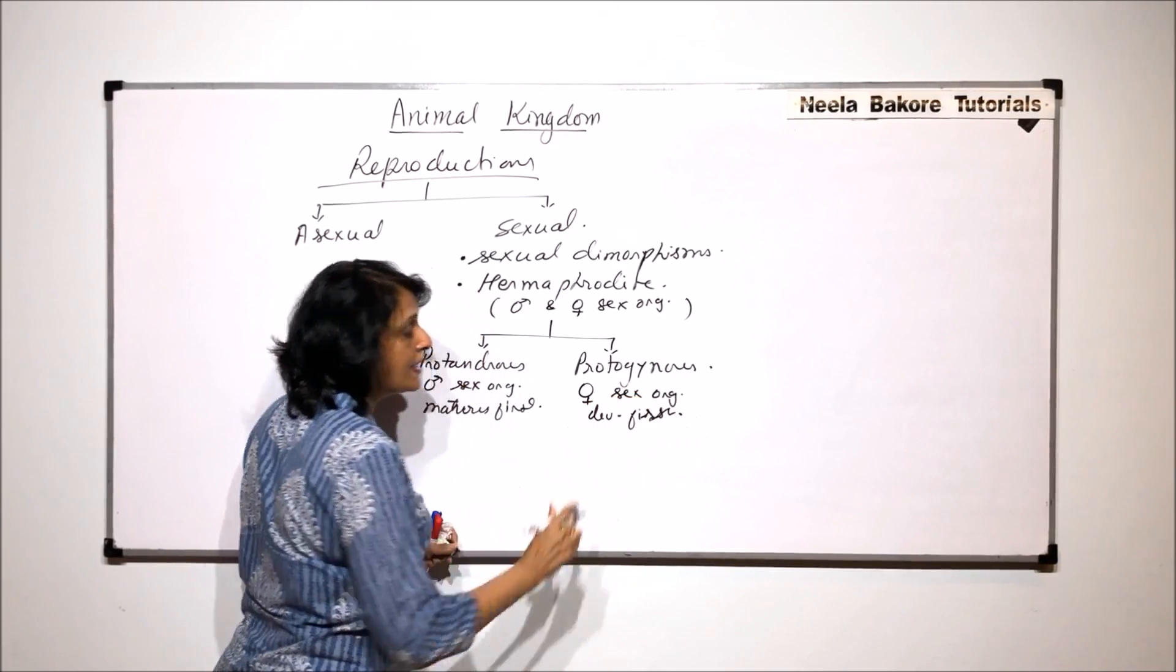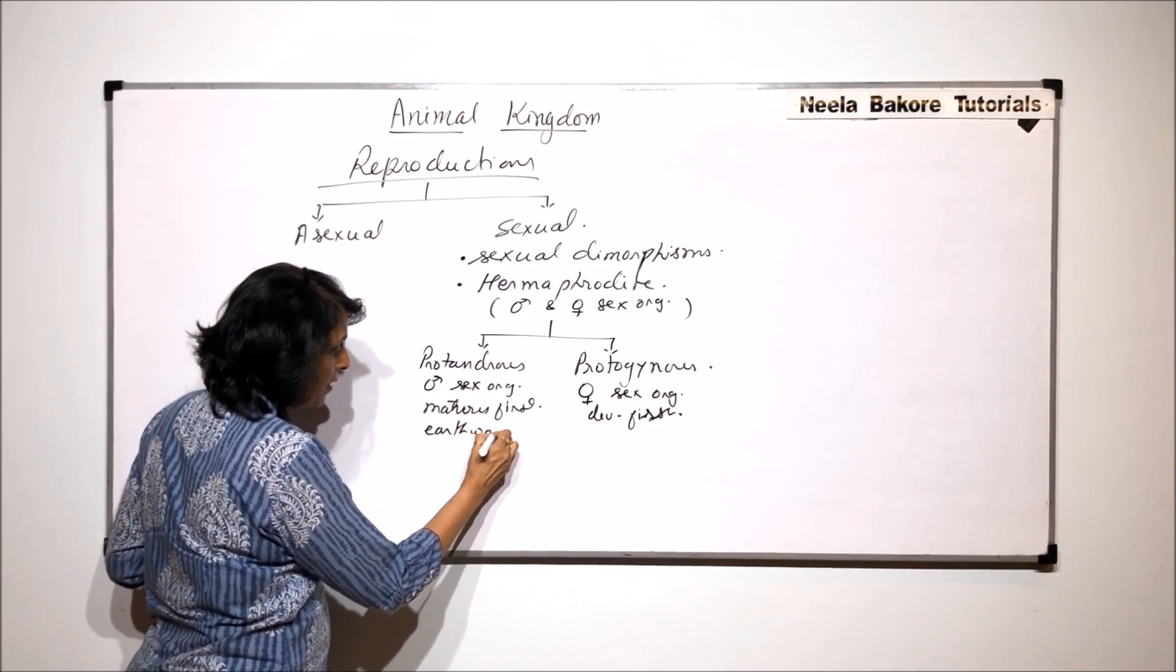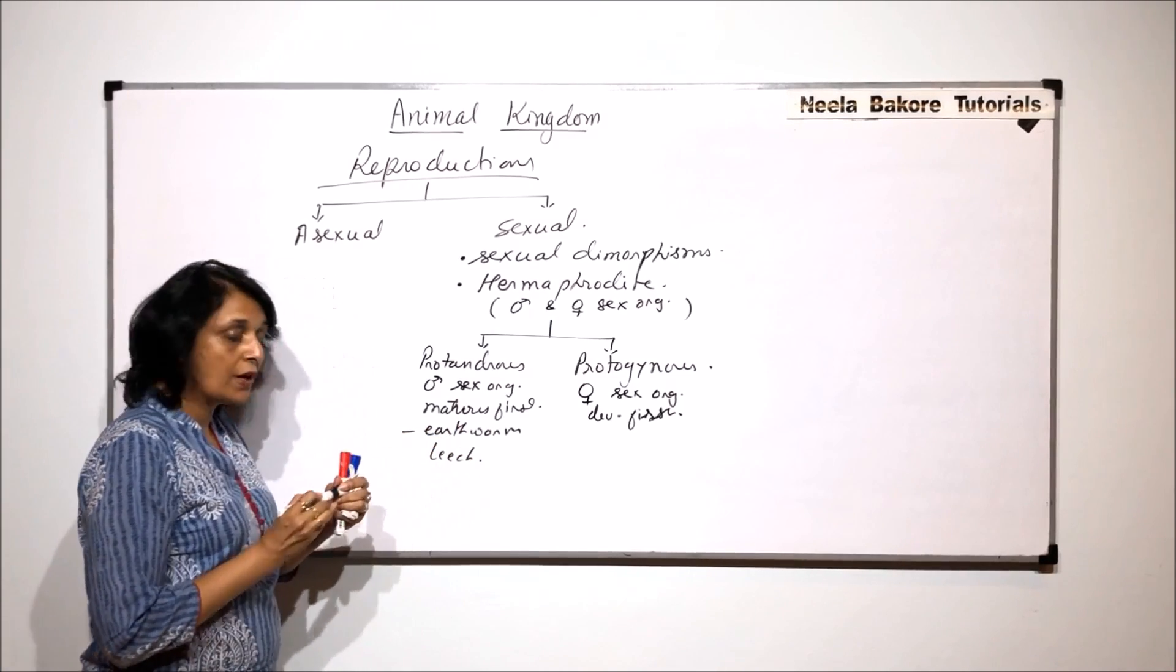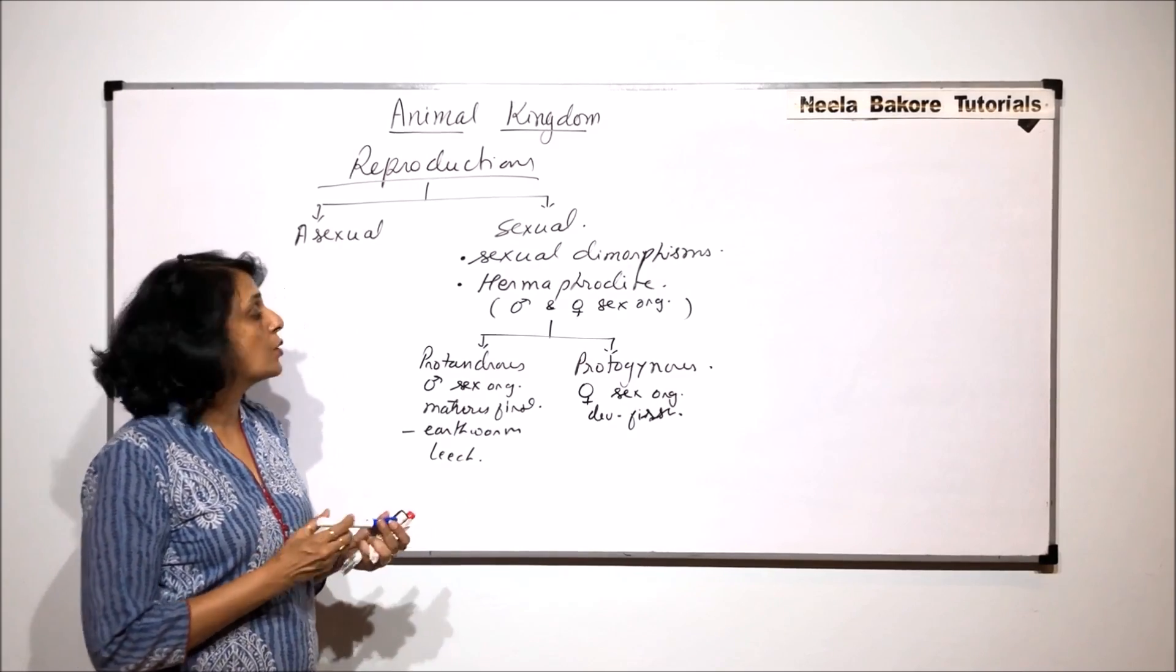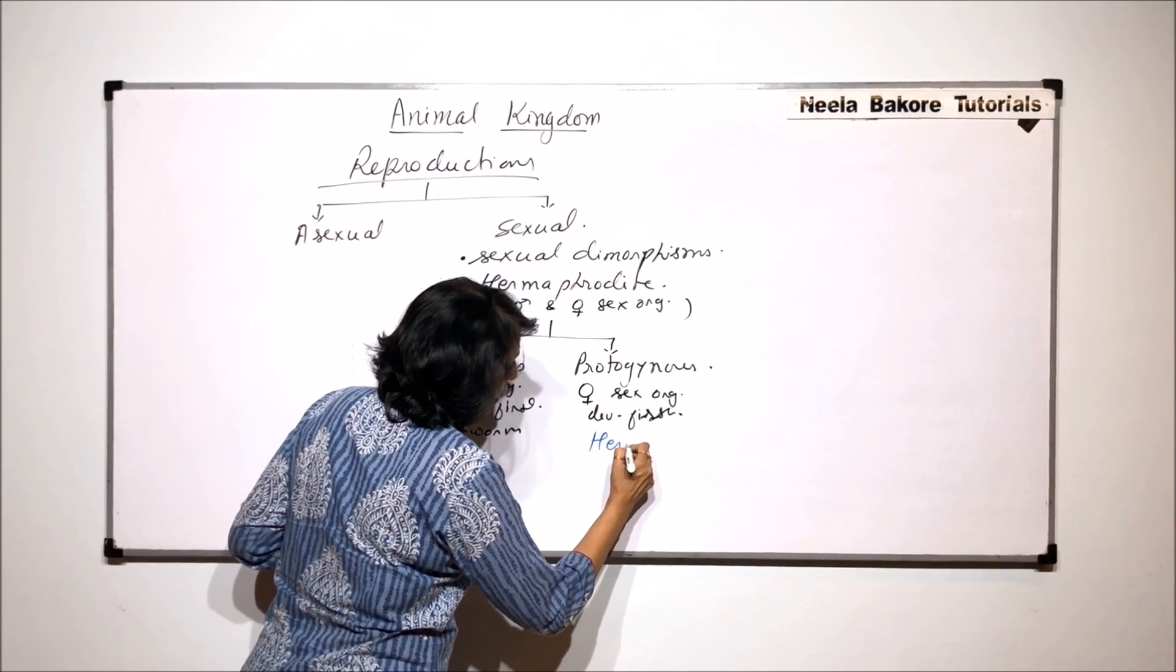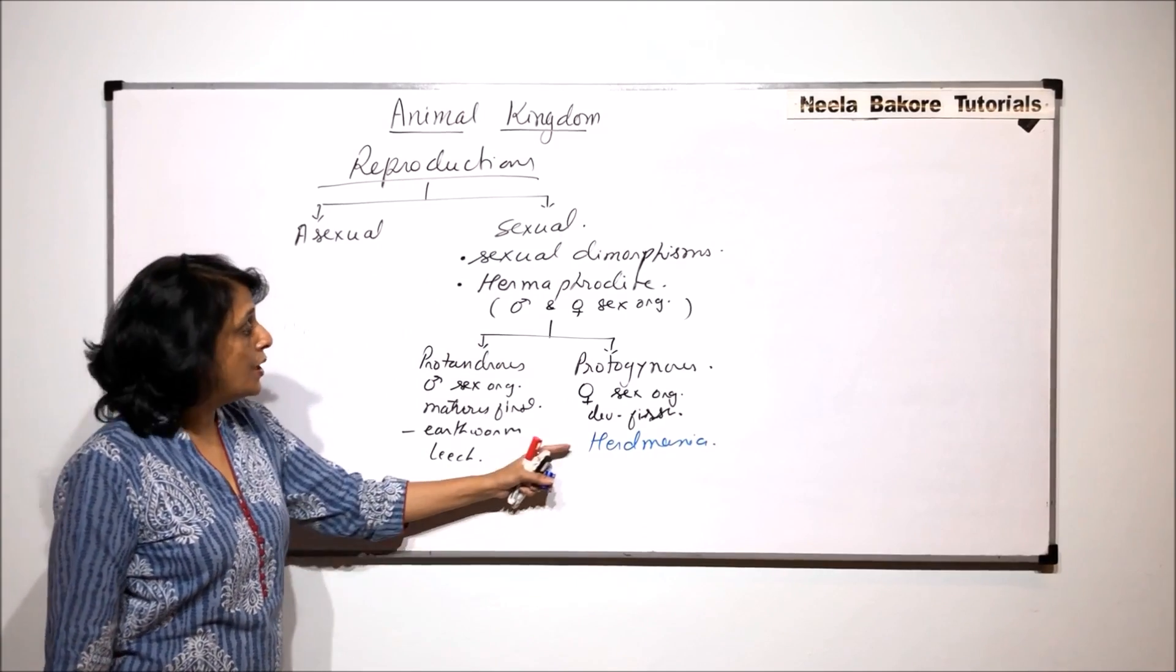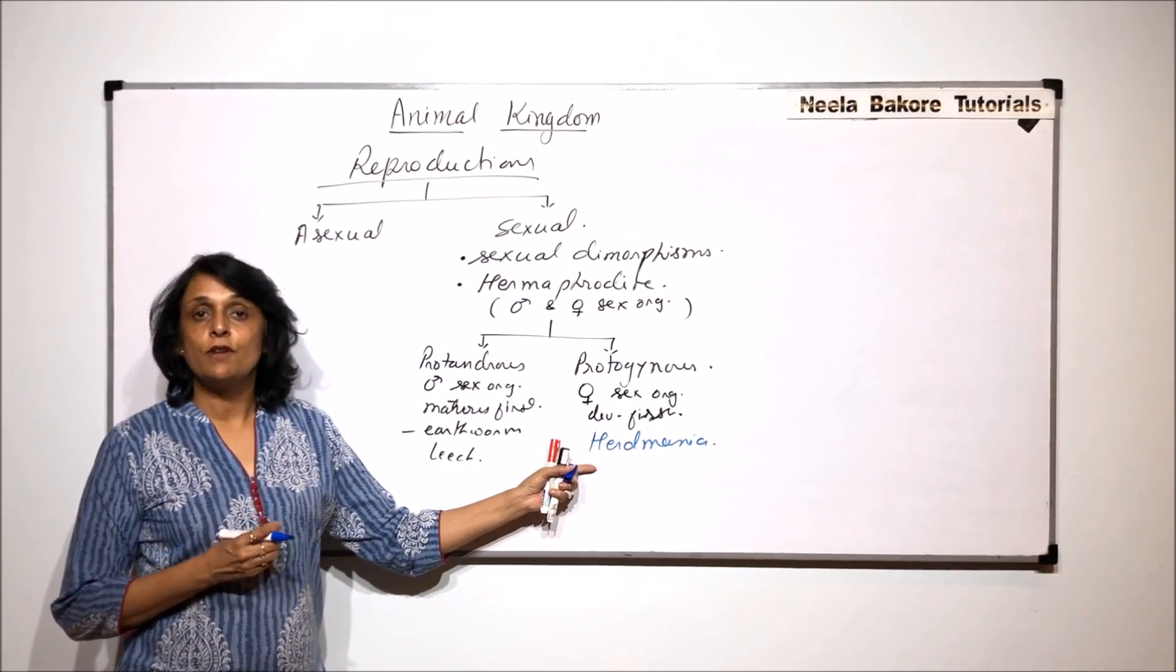Let us take one example of each category. Protandrous is earthworm, leech, that means here we are talking about these two annelids, specifically leech and earthworm. And protogynous is seen in case of herd mania, which is known as sea squirt.